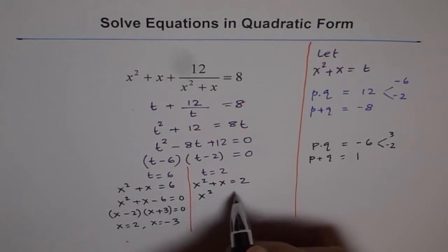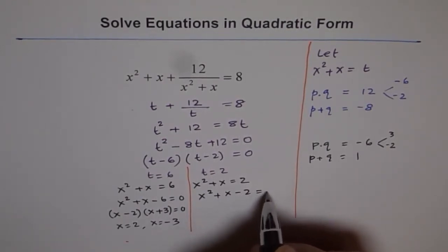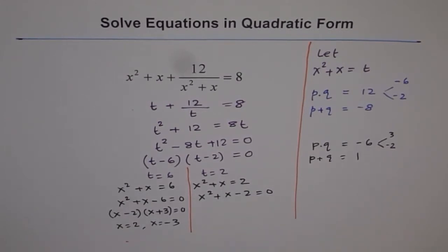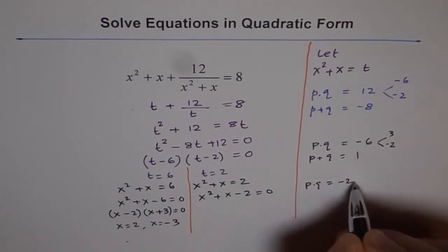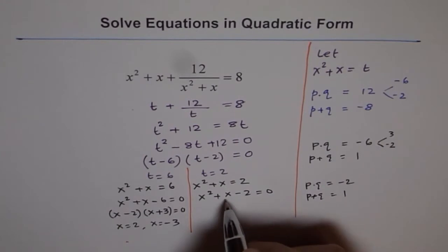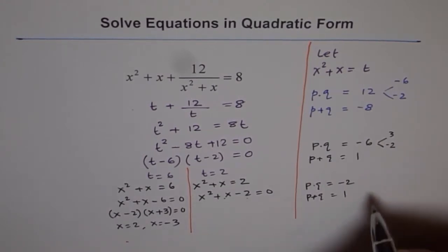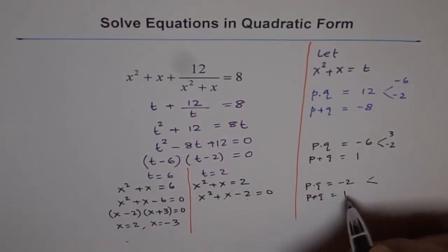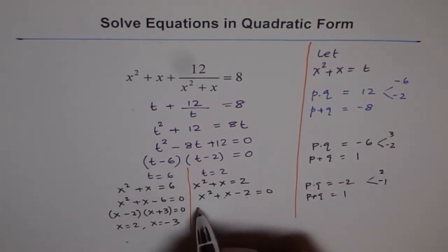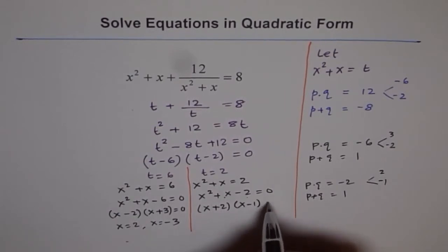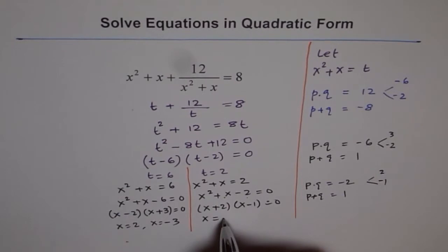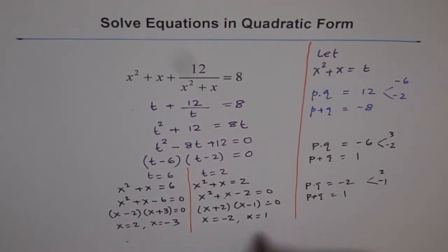From t equals 2, we get x squared plus x minus 2 equals 0, giving us additional values for x. We need two numbers whose product is minus 2 and sum is 1. Those are 2 and minus 1. So it factors as x plus 2 times x minus 1 equals 0, giving x equals minus 2 or x equals 1. Both are correct answers.